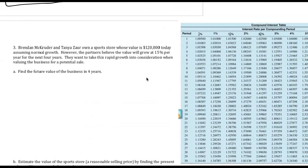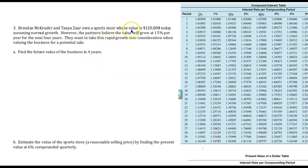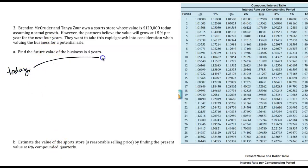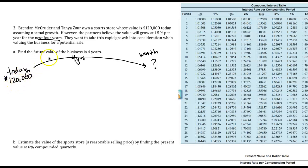Our third question: a sports store has a value today of $120,000, assuming normal growth. However, the partners believe it will grow at 15% per year for the next four years, and they want to take this into account when thinking of selling. We're going to separate this into two pieces — starting with today and finding what they believe the business is worth at the end of four years.